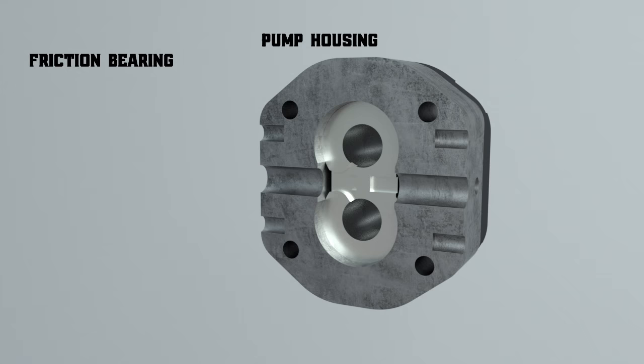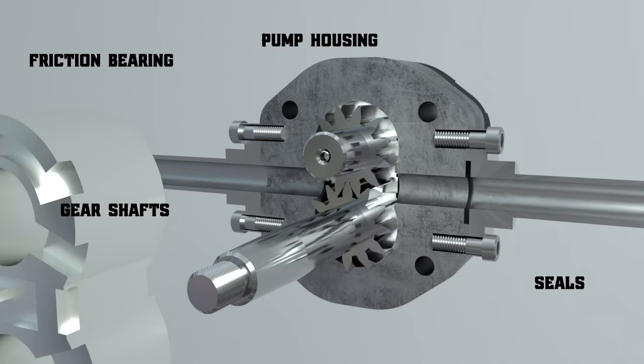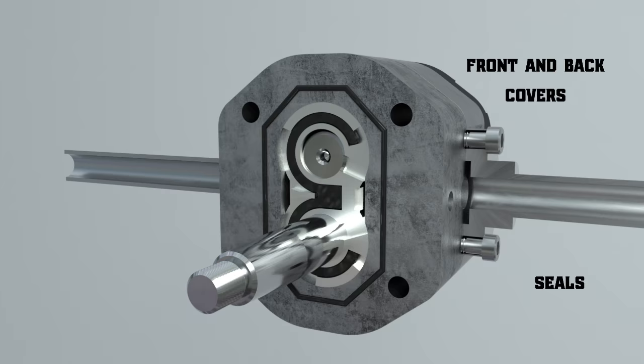They are seals to ensure the leak-proof separation of the suction and discharge channels. The front and back covers are bolted to the housing. The shaft sleeve and the rubber rings prevent fluid from flowing out of the pump.